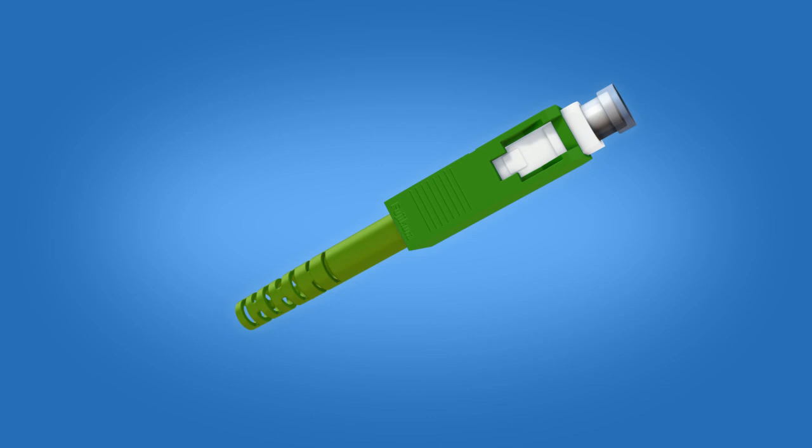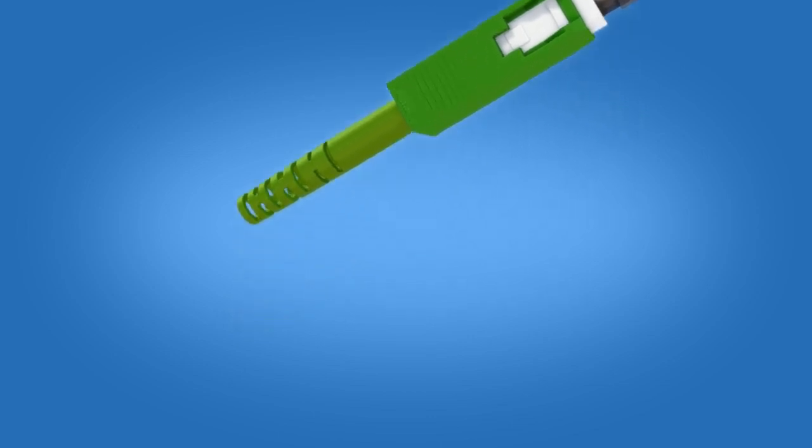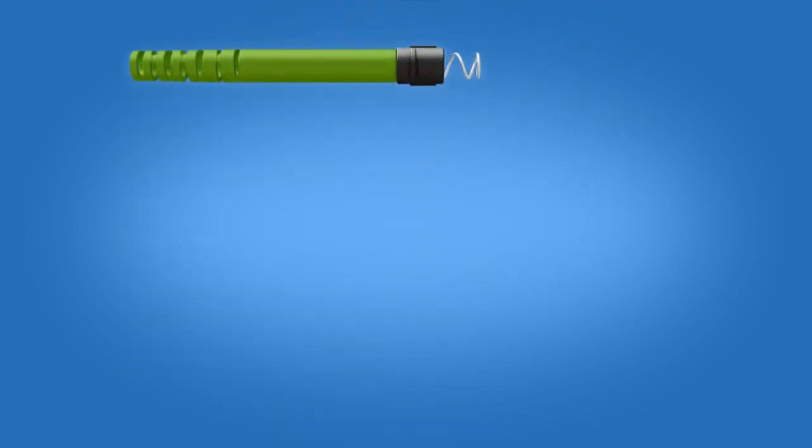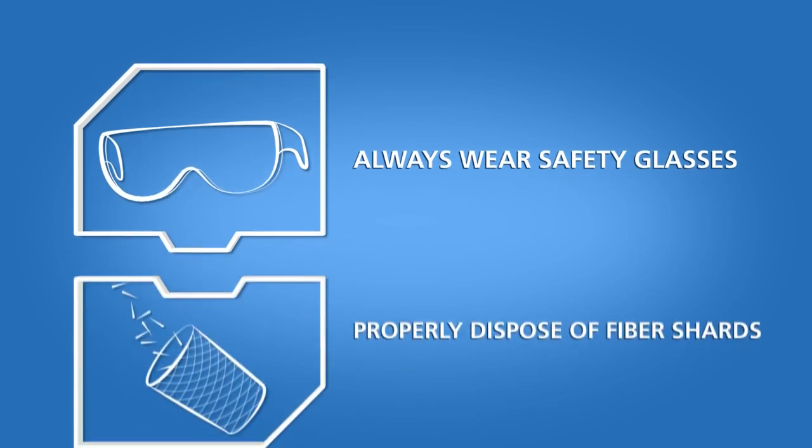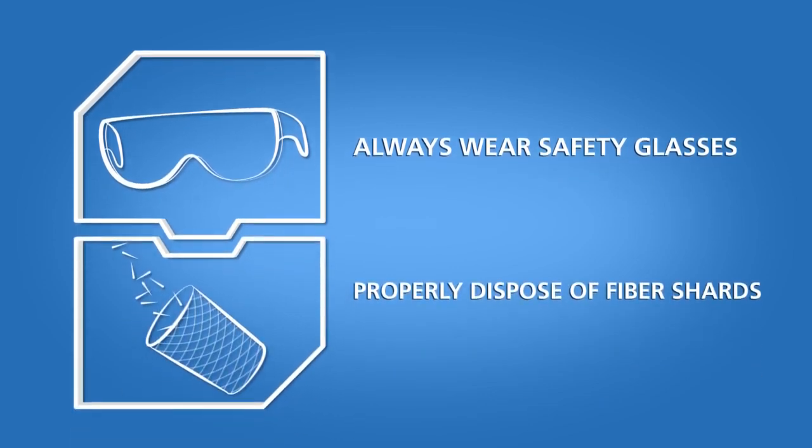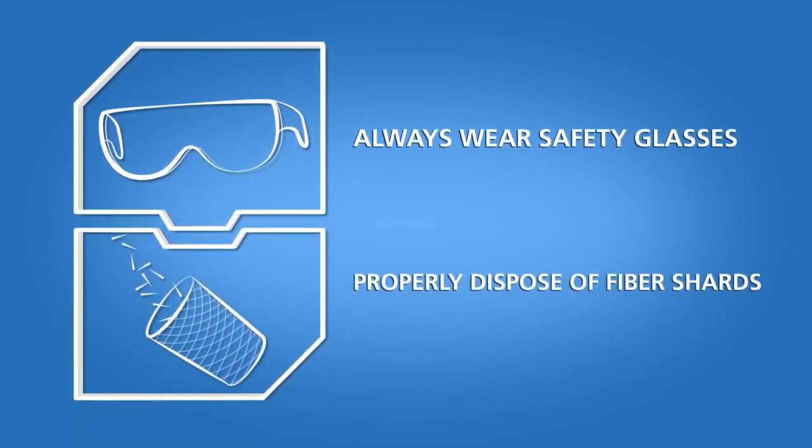The SC-APC connector includes the following materials: a boot unit, a protective sleeve, a ferrule unit, a connector body, connector housing, and a dust cap. Always wear safety glasses and properly dispose of fiber shards when handling and cleaving optical fibers.